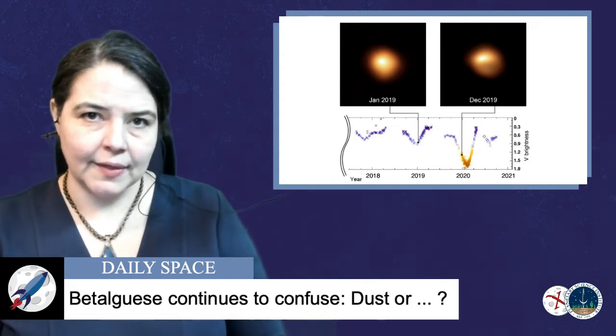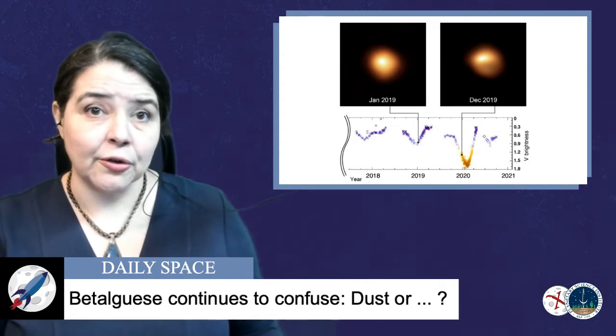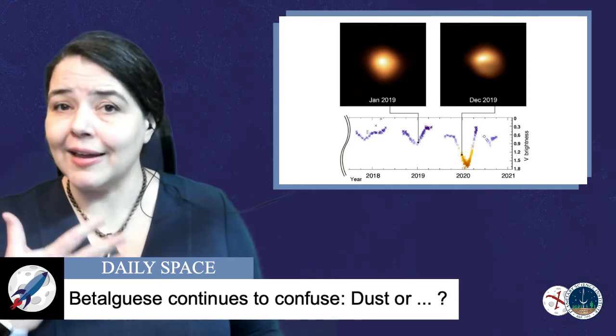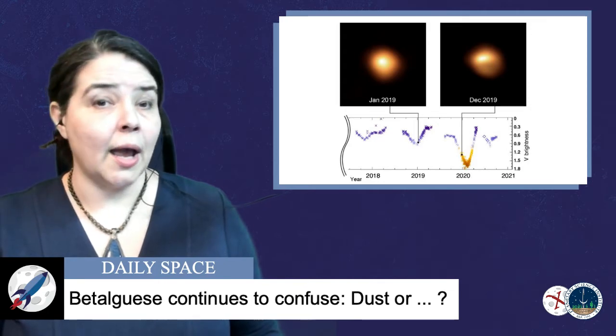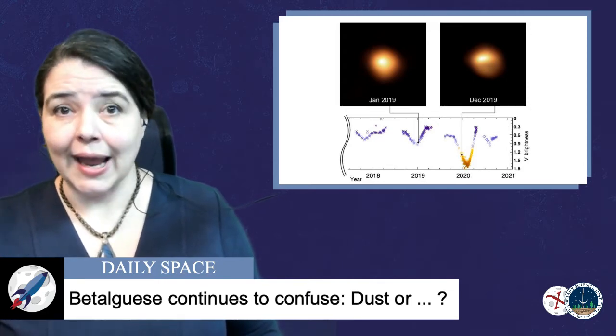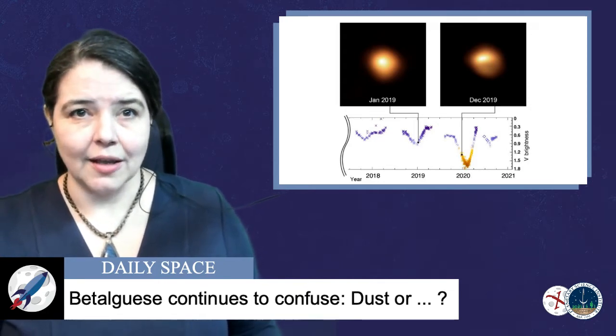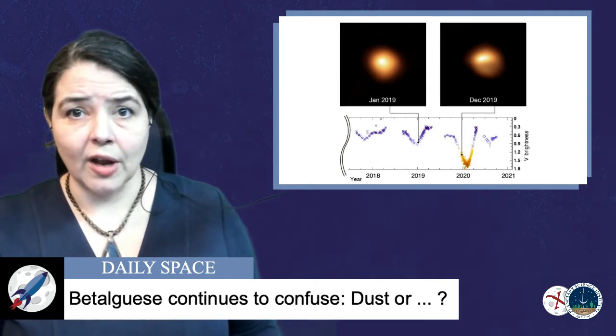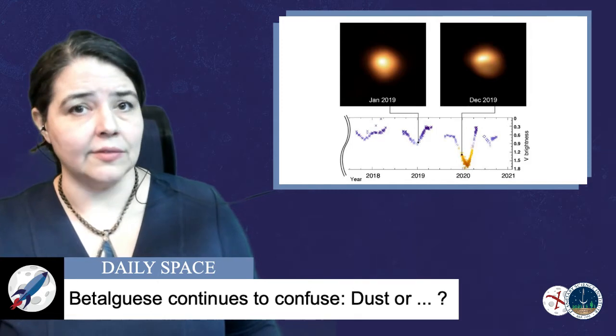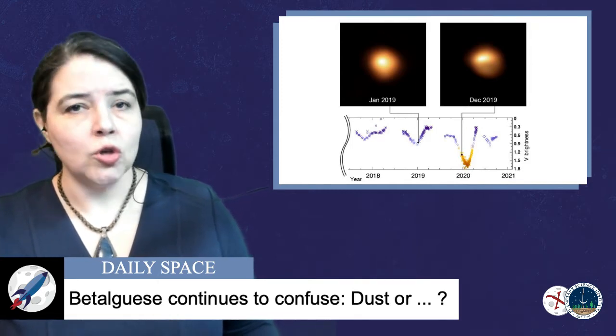A new paper in the Astrophysical Journal with lead author Graham Harper uses five years of observations to understand the star in a context that looks at both before, during, and after the dimming event. They also start from scratch, calculating their own values for the star's temperature, size, and location in a consistent way.